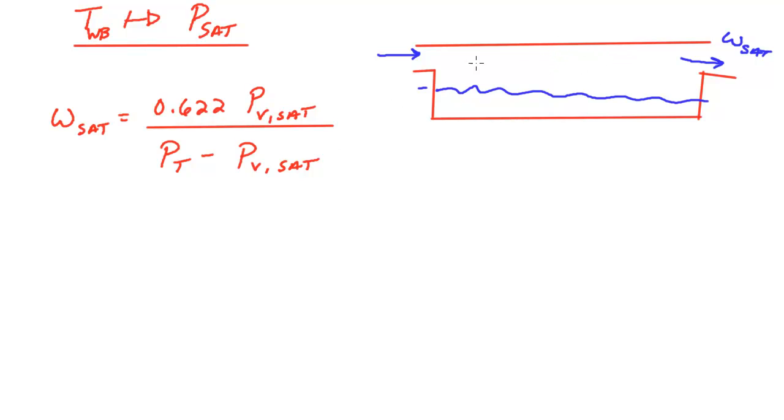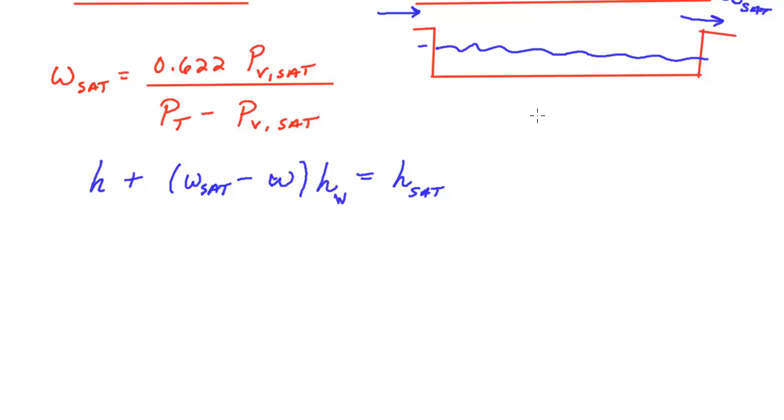Now, we're going to use one of the relationships we derived in this experiment. One relation we came up with was the enthalpy of the moist air mixture coming in plus this omega saturation at the end, minus the omega coming in, or absolute humidity ratio coming in, times the enthalpy of water, liquid water, at this temperature, at the wet bulb temperature, that's equal to the enthalpy of the mixture at this saturation condition exiting.